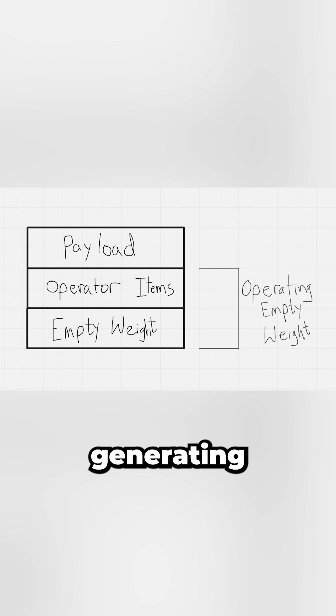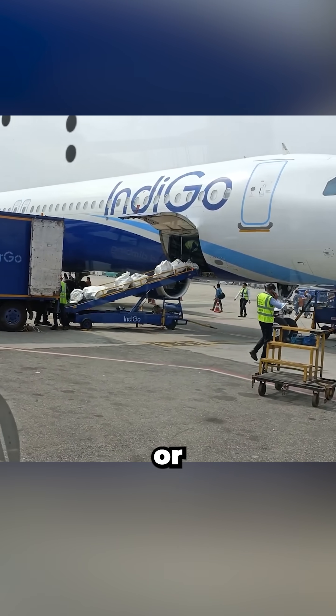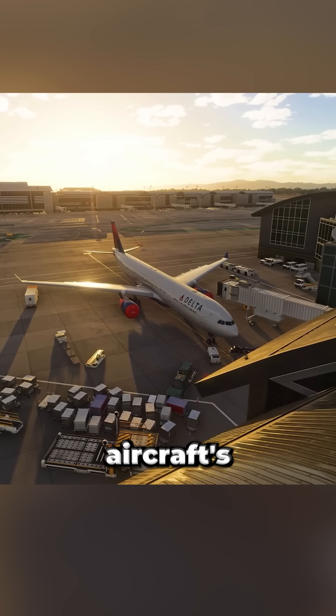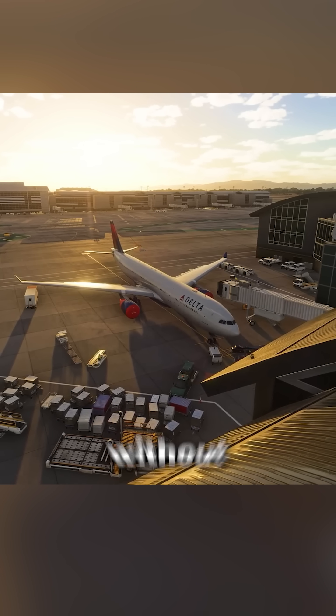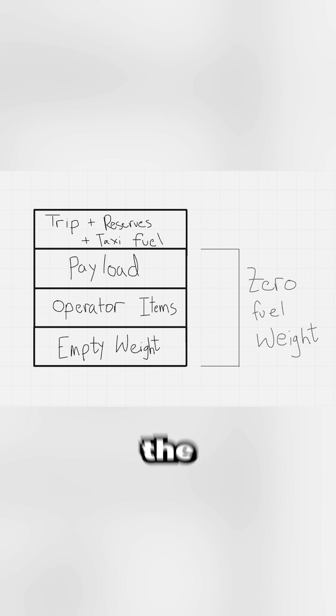Next, add the payload — the revenue-generating load like the passengers, their baggage, or cargo — and you get the zero fuel weight, which is simply the aircraft's total weight without usable fuel on board.